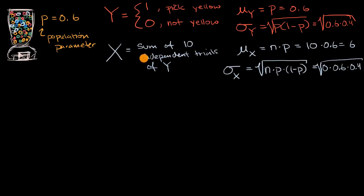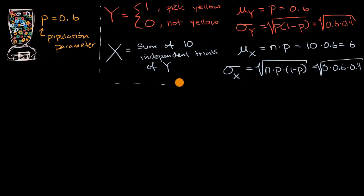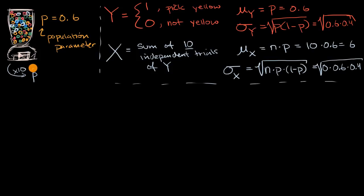So all of this is review. If it's unfamiliar, I encourage you to review the videos on Bernoulli and binomial random variables. What we're going to do in this video is think about a sampling distribution — specifically the sampling distribution for a sample statistic known as the sample proportion. So let's start taking samples of 10 and calculate the proportion that are yellow, which we'll call our sample proportion.